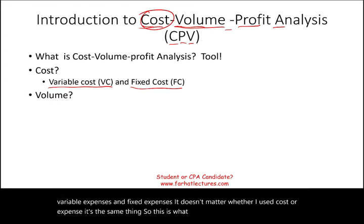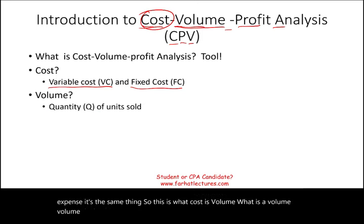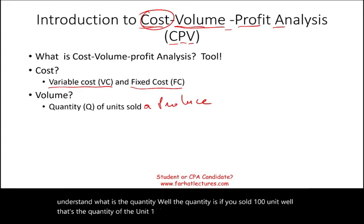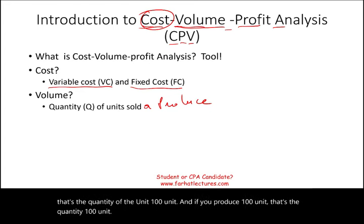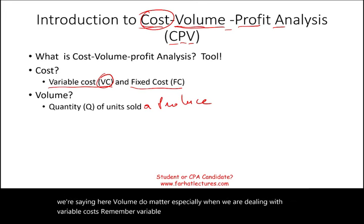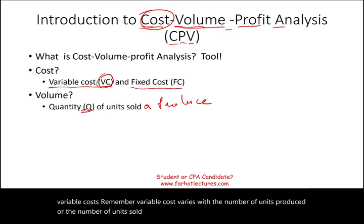Volume deals with quantity — the quantity of units sold or produced. If you sold 100 units, that's the quantity: 100 units. There is a relationship between cost, volume, and profit, and volume matters especially when dealing with variable costs, because variable cost varies with the number of units produced or sold. That's why quantity is important.